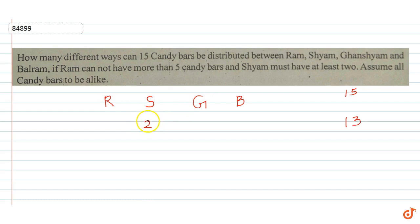Shyam has at least 2. Now we have one condition given: Ram cannot have more than what? More than 5 candy bars. So Ram can have up to 5 candy bars.